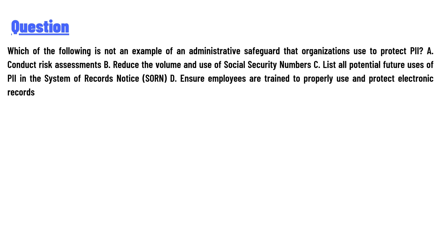The options are: A) reduce the volume and use of social security numbers; B) list all potential future uses of PIA in the system of record notice; C) ensure employees are trained to properly use and protect electronic records.